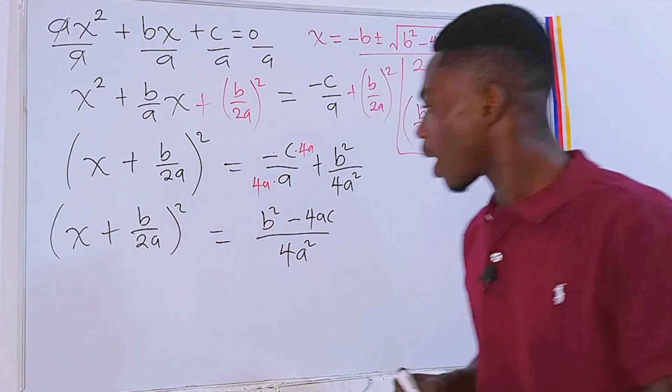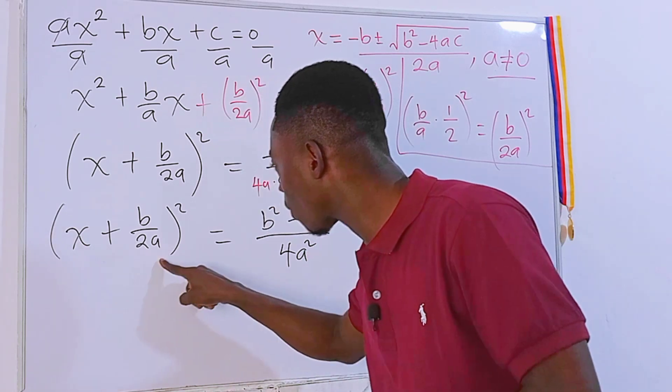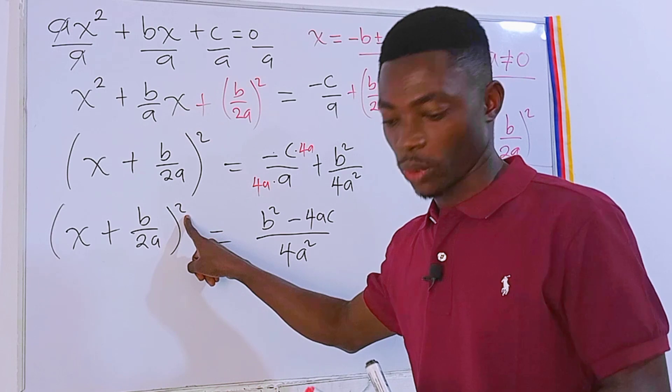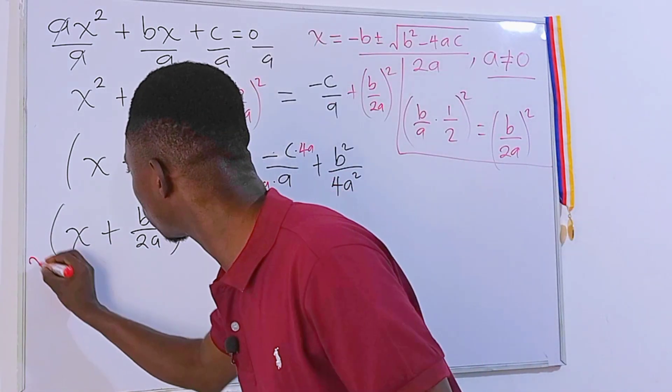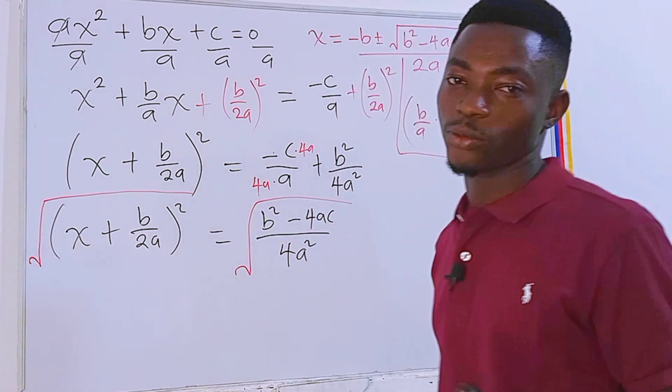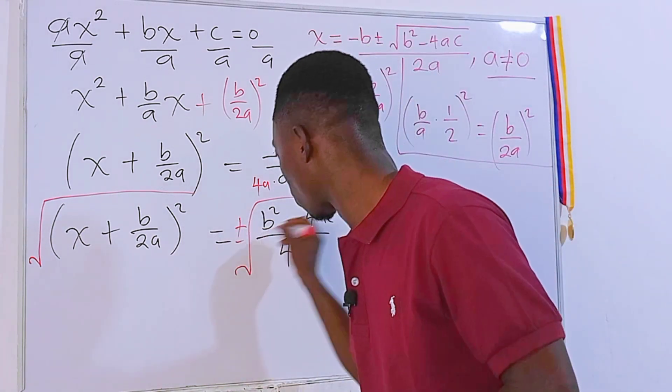Now check this out. We are looking for x but we have the rule of this all squared. Before we can find x we need to get rid of this square here. So let's do that by taking square root on each side of the equation. And of course we are not forgetting our plus or minus. Very important.